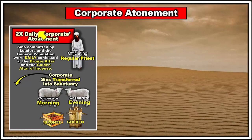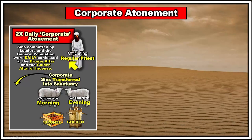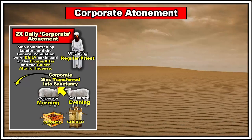We're going to start by looking at corporate atonement — a term not very familiar to many people, but it's a very biblical term. Twice daily in the temple they had corporate atonement. Sins committed by the leaders and the general population were daily confessed at the bronze altar and also at the golden altar of incense. The corporate atonement was officiated by the regular priests, who brought a lamb for sacrifice in the morning and another in the evening.